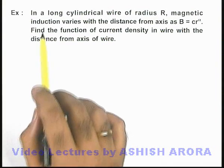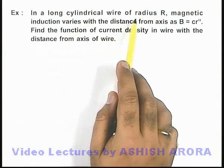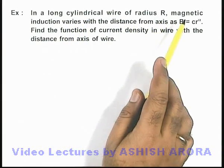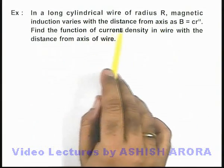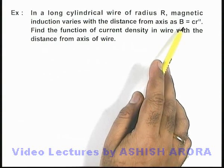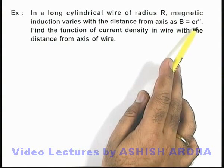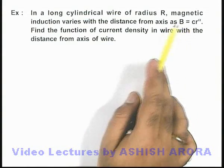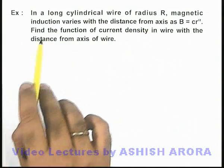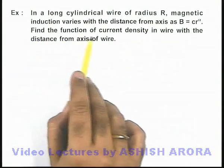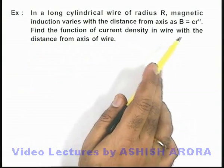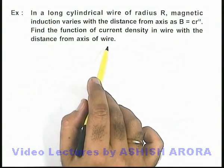In this example, we are given that in a long cylindrical wire of radius R, magnetic induction varies with the distance from its axis as B = cr^α. Here c and α can be considered as constants. We are required to find the function of current density in the wire with the distance from the axis of wire.